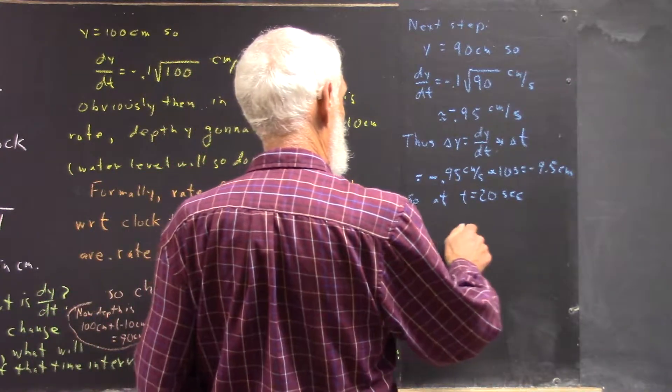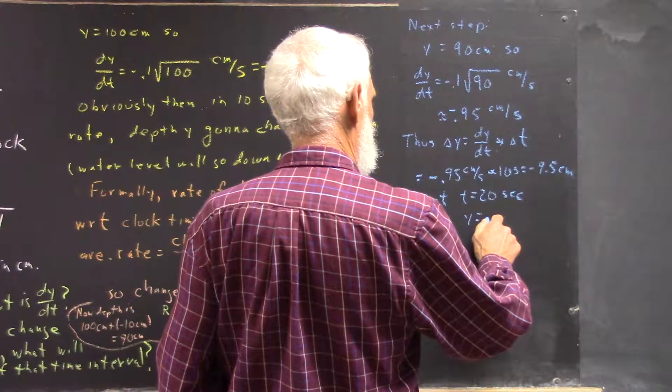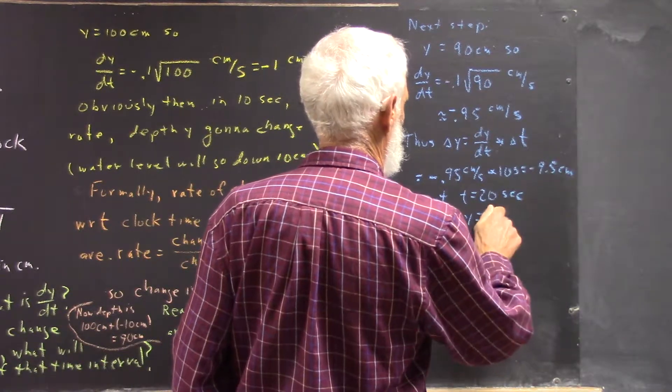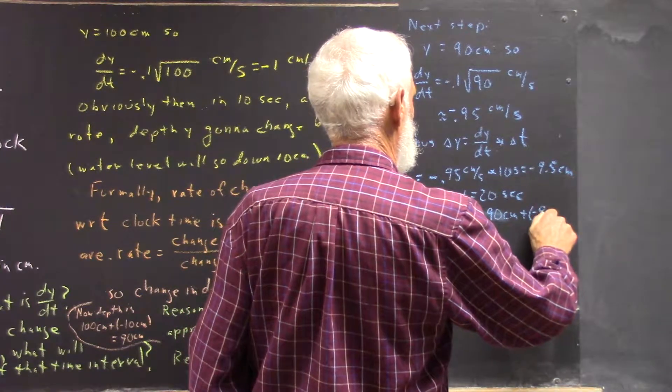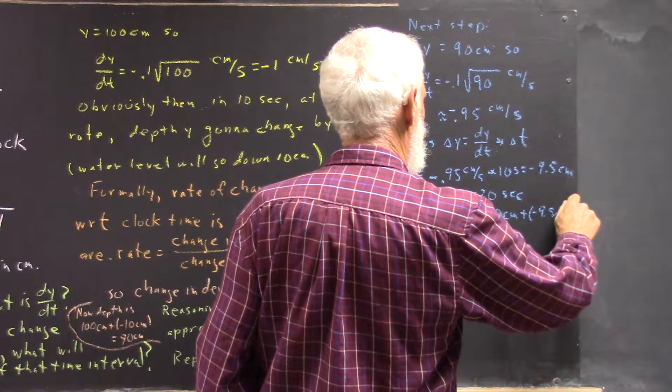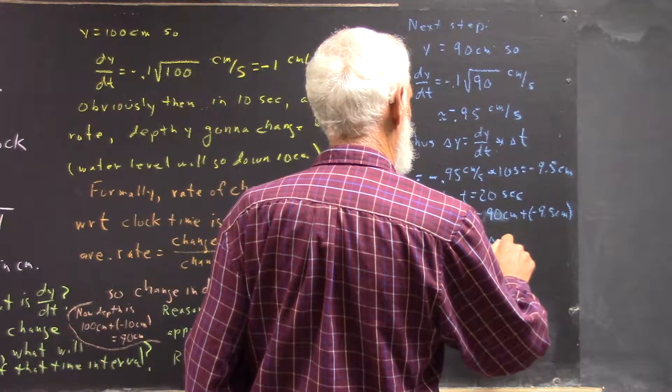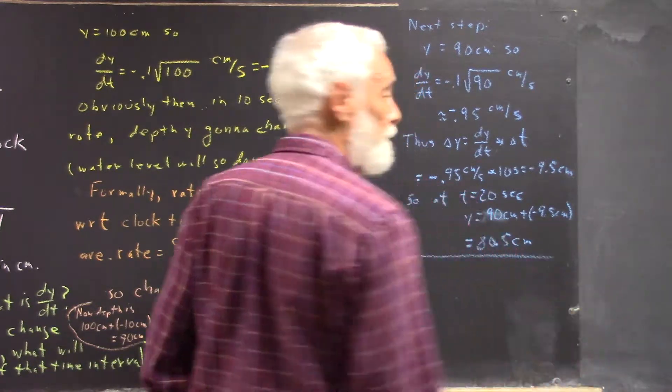y equals, not 100 centimeters, sorry, 90 centimeters, plus negative 9.5 centimeters, equals 80.5 centimeters. Okay?